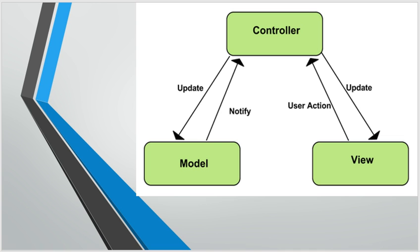The controller changes the model according to what action is needed. For example, if you are viewing a list of students in a school and you click an edit button, the controller will fetch that specific student's data from the list and display the individual student data on the view, inside an editable text input.